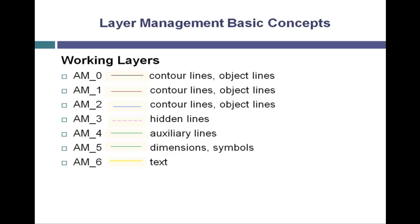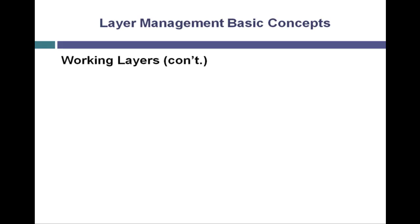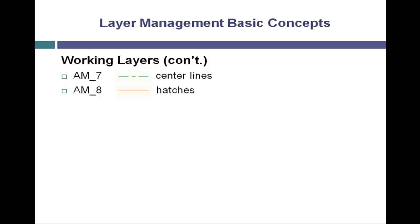AM underscore six is used for text and it has a yellow color and a continuous line type. Additional working layers include AM underscore seven, which is used for center lines, has a center line line type and a cyan color. AM underscore eight has a red color, a continuous line type, and is used for hatch objects. AM underscore nine has a darker gray color, a continuous line type, and is used for objects that hide commands have made invisible.